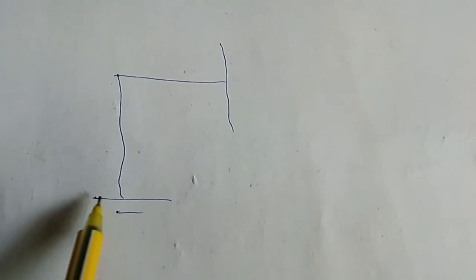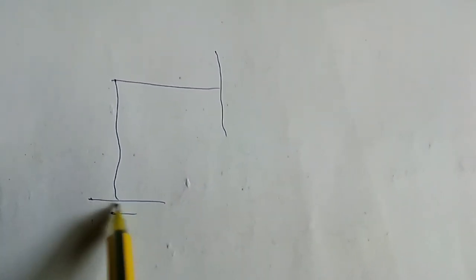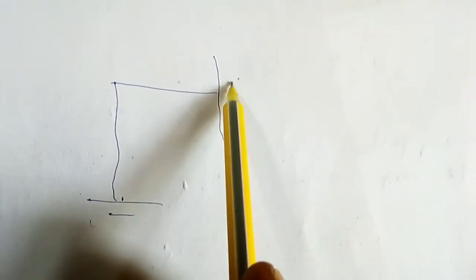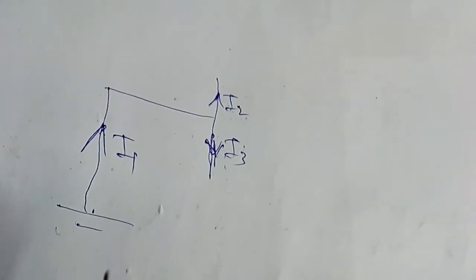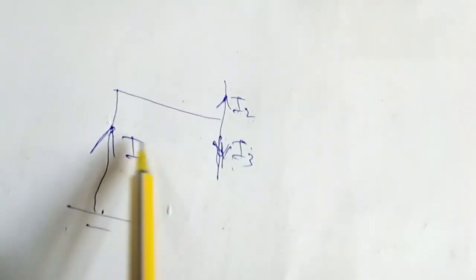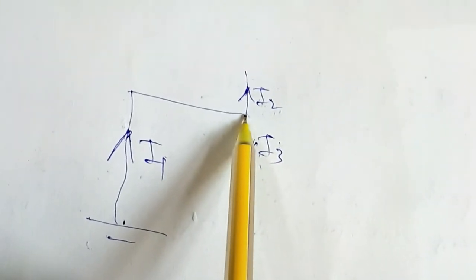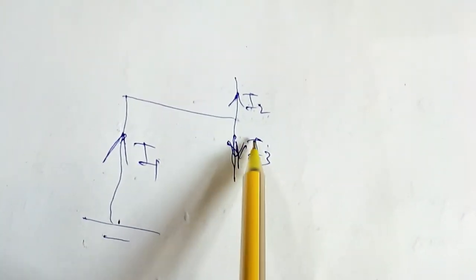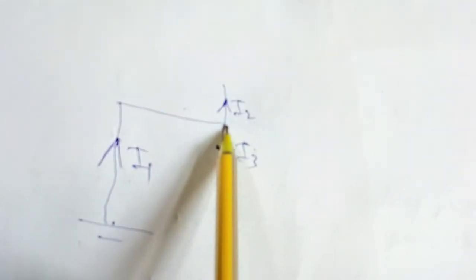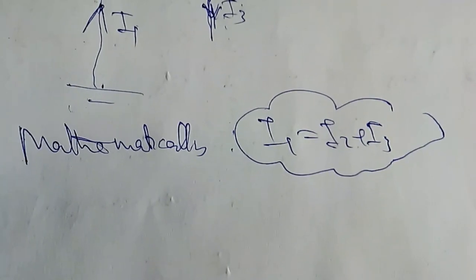Let us see another example. Here we have a source with two terminals. The quantity of current from this source is equal to the current leading to these terminals, meaning I1 is equal to I2 plus I3, because I1 is entering this junction while I2 and I3 are the currents leaving this junction. According to the law, current entering any junction equals current leaving that junction.